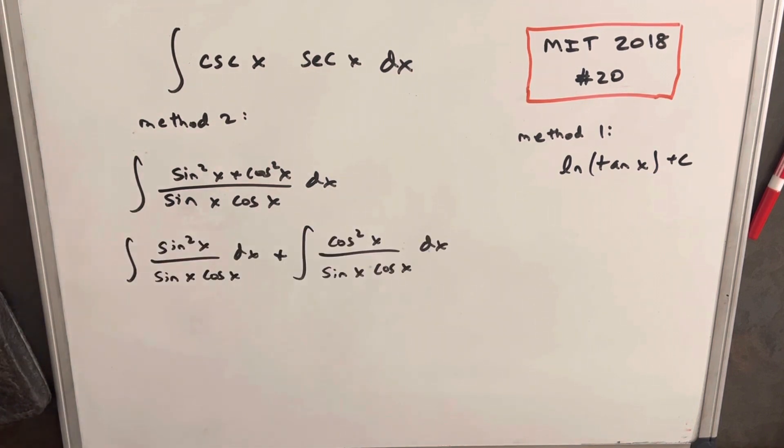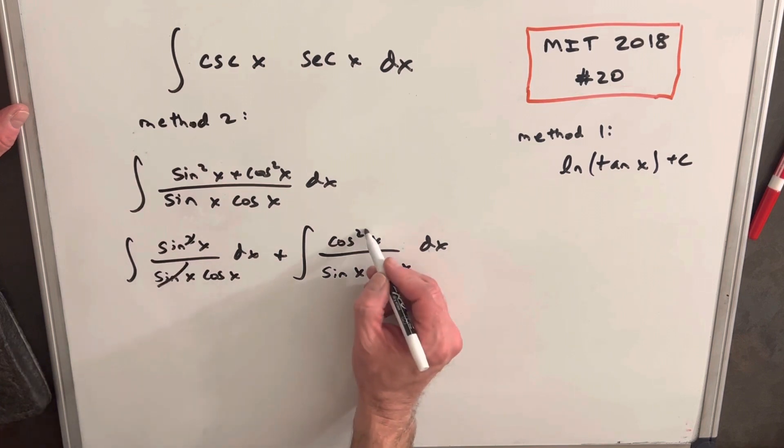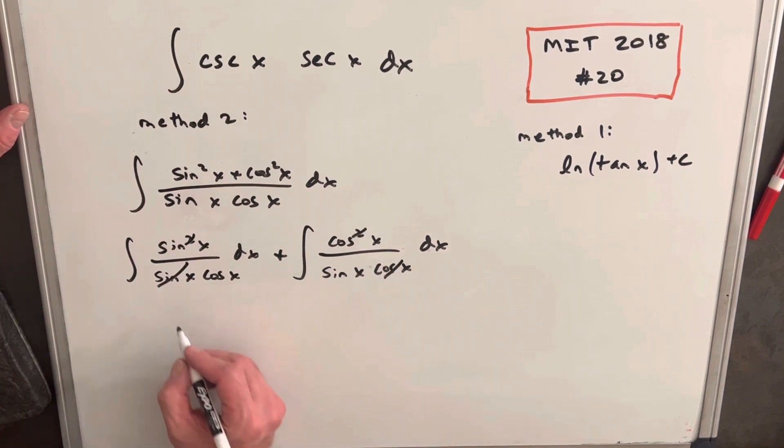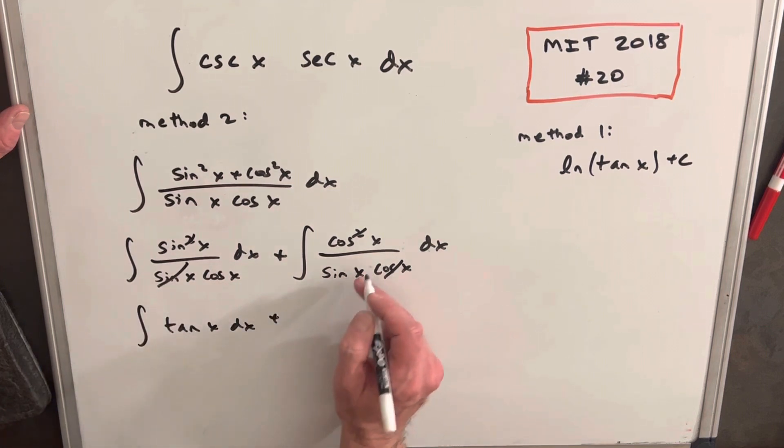Okay, and then you'll see that we have some nice cancellation. We can cancel 1 sine here, and we can cancel 1 cosine here. But then what we're left with is this one's just going to be the integral of tangent, and this one's going to be the integral of cotangent.